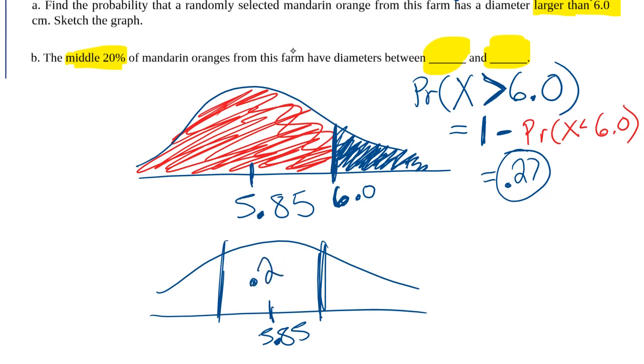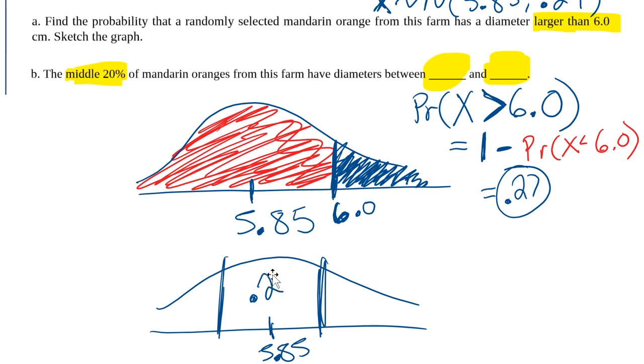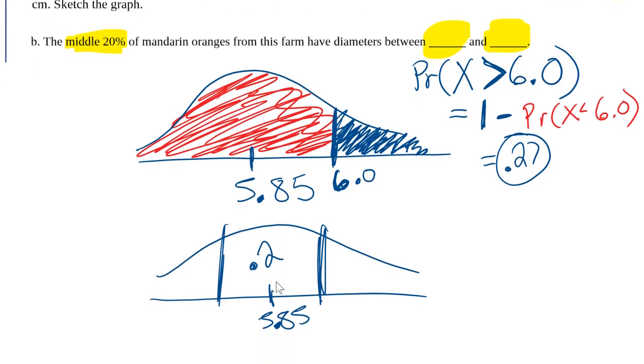So that's what middle 20% means. 20% around the mean. So basically, I'm trying to figure out what is this? I'm going to label this as A and B. What are A and B? Between what two numbers, A and B?